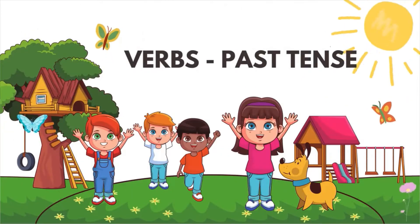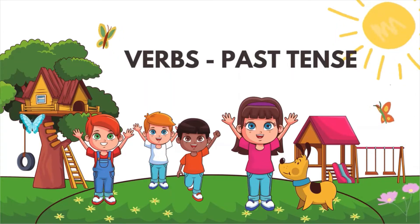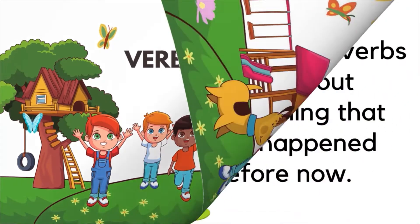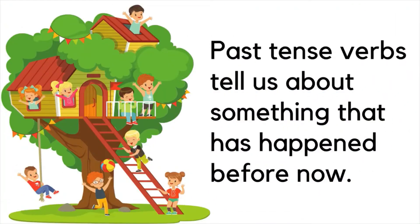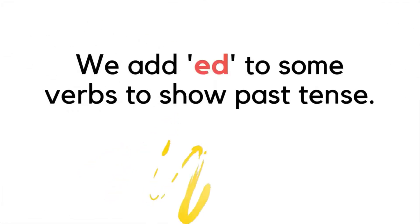Hi kids! Today we will be looking at past tense verbs. Verbs are action words — they tell what a person, animal, or thing is doing or has done. Past tense verbs tell us about something that has happened before now. It could be something that happened years ago or just yesterday. We add ED to some verbs to show past tense. Let's look at a few examples.